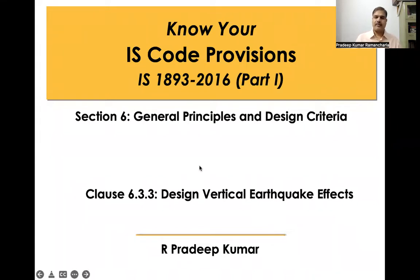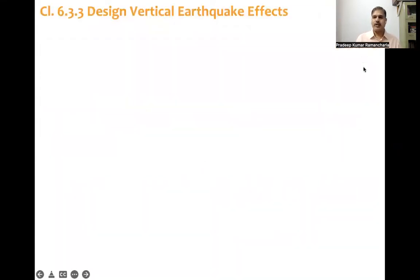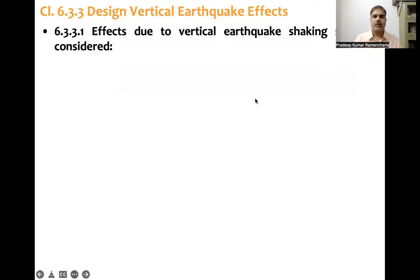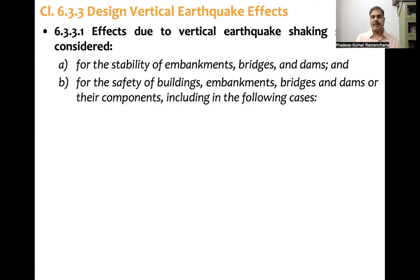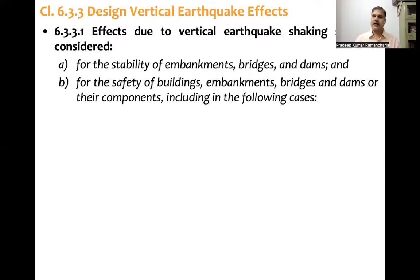Design Vertical Earthquake Effects — Clause number 6.3.3. Effects due to vertical earthquake shaking shall be considered for two reasons: one is for stability, and another one is for safety. Stability of structures like embankments, bridges, and dams — because these are long structures. And also for safety of buildings, embankments, bridges, and dams, and their components including the following. What are the other things when this vertical ground motion is considered?